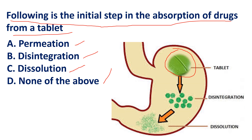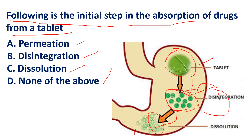The first step in the GIT process is disintegration — the breaking of the tablet into small particles in the form of granules. Then de-aggregation gives more fine particles, followed by dissolution. Once the drug is available in dissolved form, it is absorbed into the blood — that is permeation. So the first step is disintegration. The answer is B.